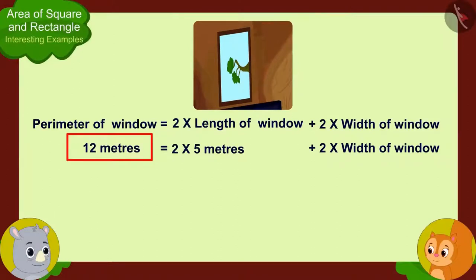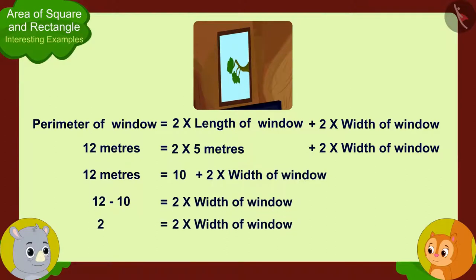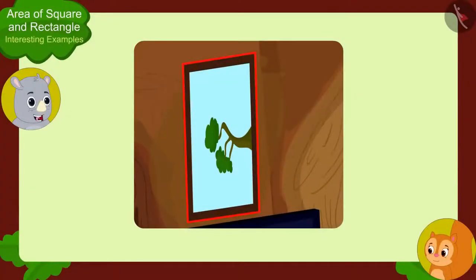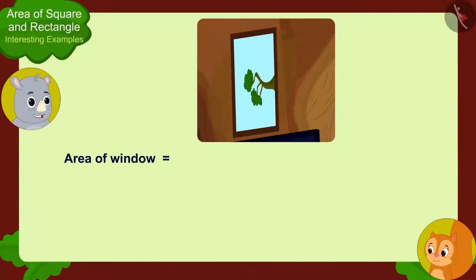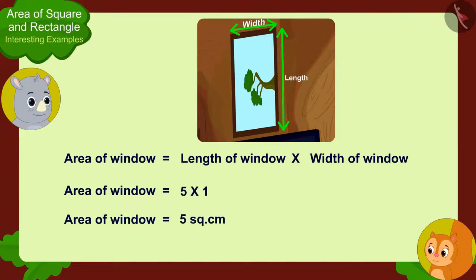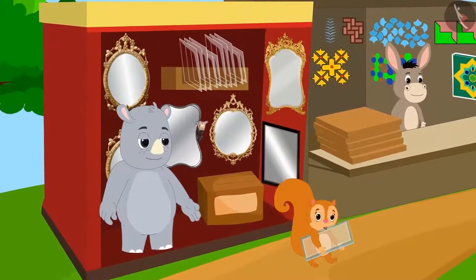Gaggoo quickly wrote the perimeter and length of Chanda's window. He showed that we can easily find the width: the width of the window is 1 meter. Because the window is rectangle shaped, we only have to multiply the length by the width to find the area of the glass. In this way, the area of the glass will be 5 times 1, which is 5 square meters. Chanda thanked Gaggoo and happily returned home after purchasing her glass.